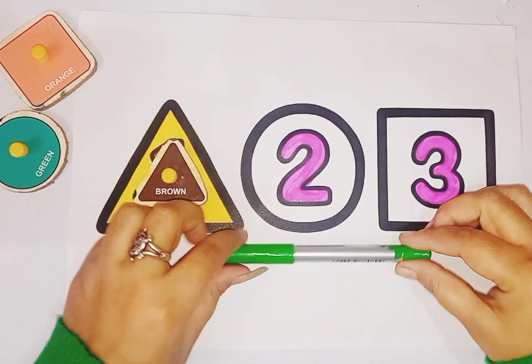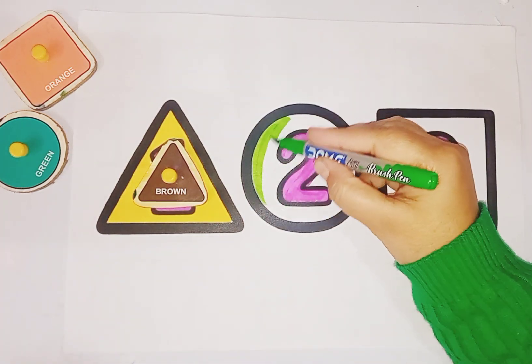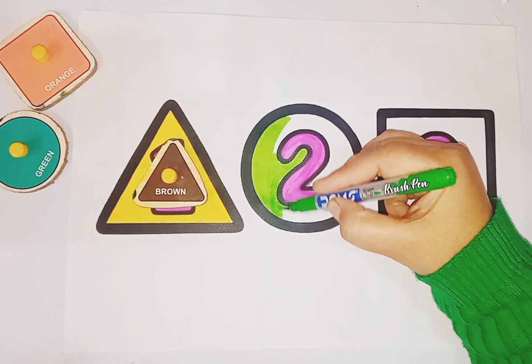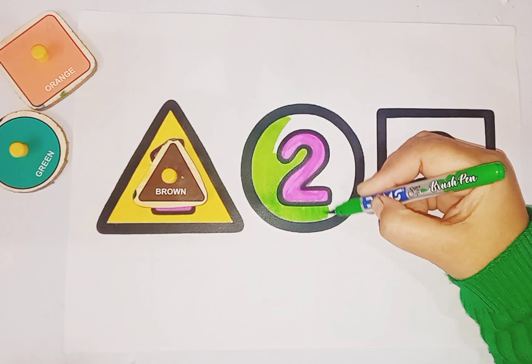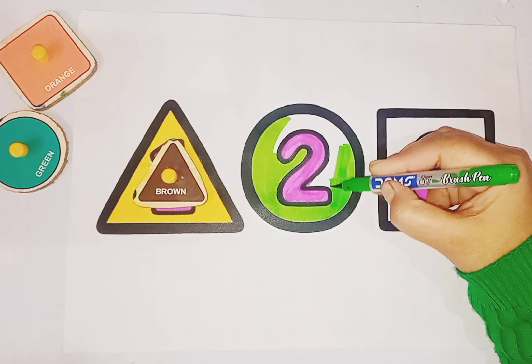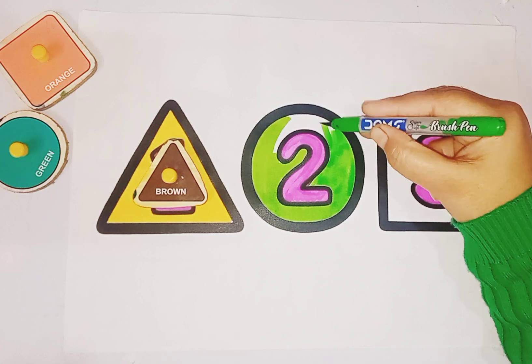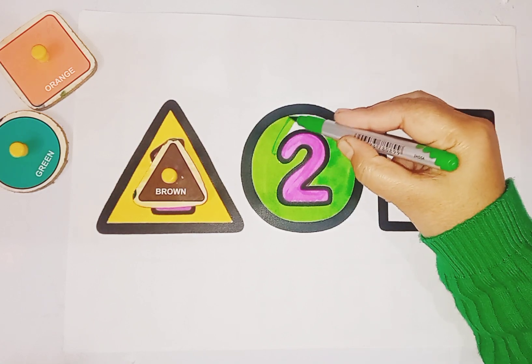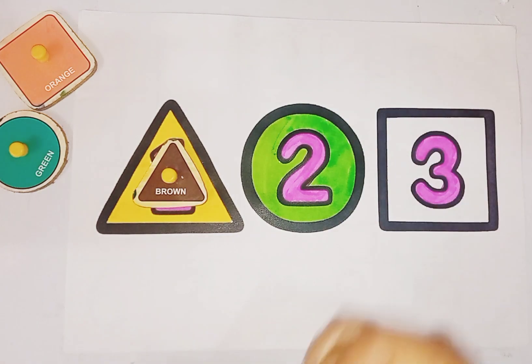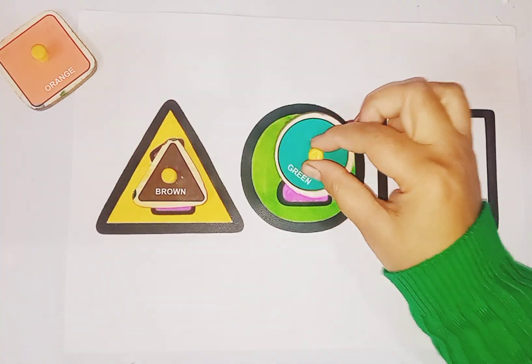Light green color, circle. Circle is like round round, this is circle. Circle is like this, round round.